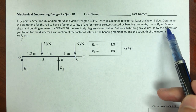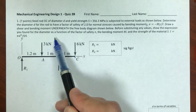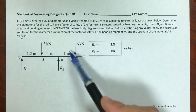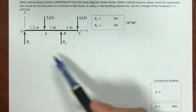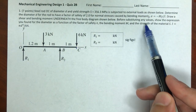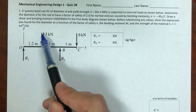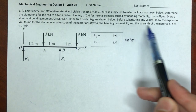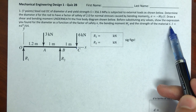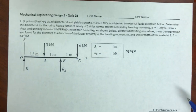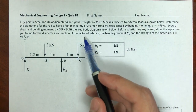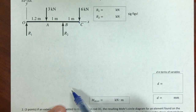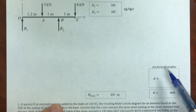Draw a shear and a bending moment diagram underneath the free-body diagram shown. Before submitting any values, show the expression you found for the diameter as a function of the factor of safety N, bending moment M, and the strength of the material S, using I equal to πD⁴/64. There are two parts: first find the expression for D in terms of variables, which has nothing to do with the actual moment values.